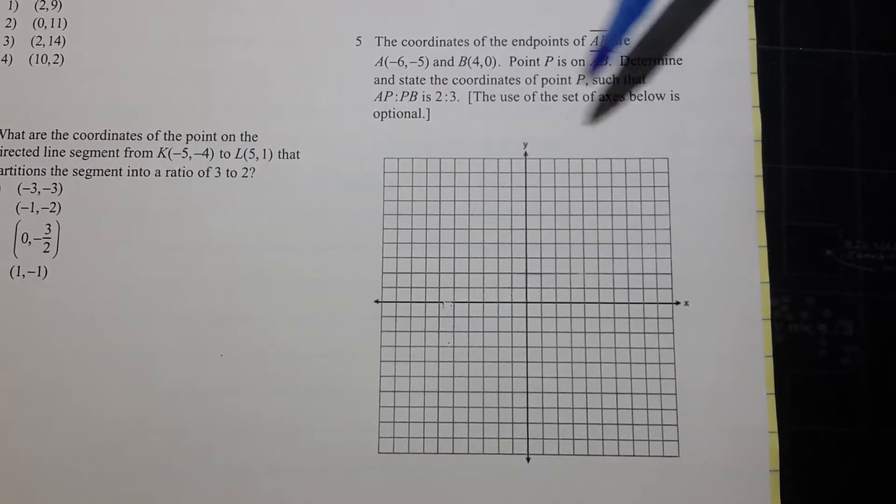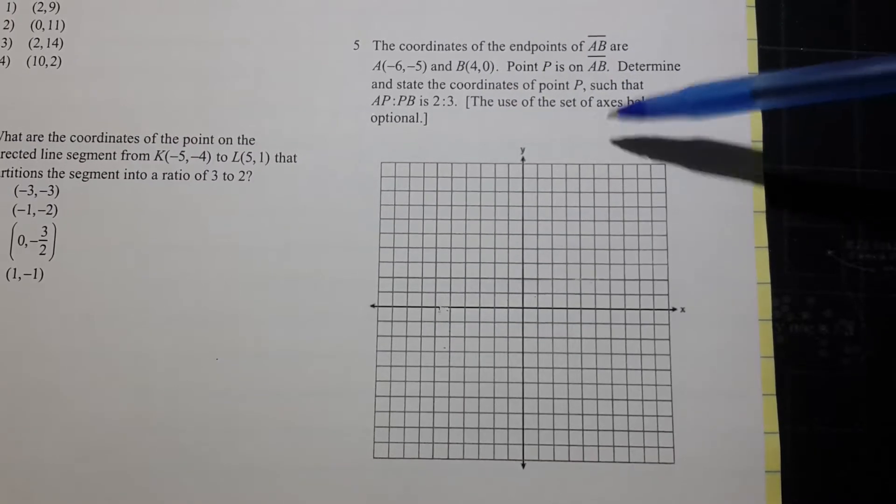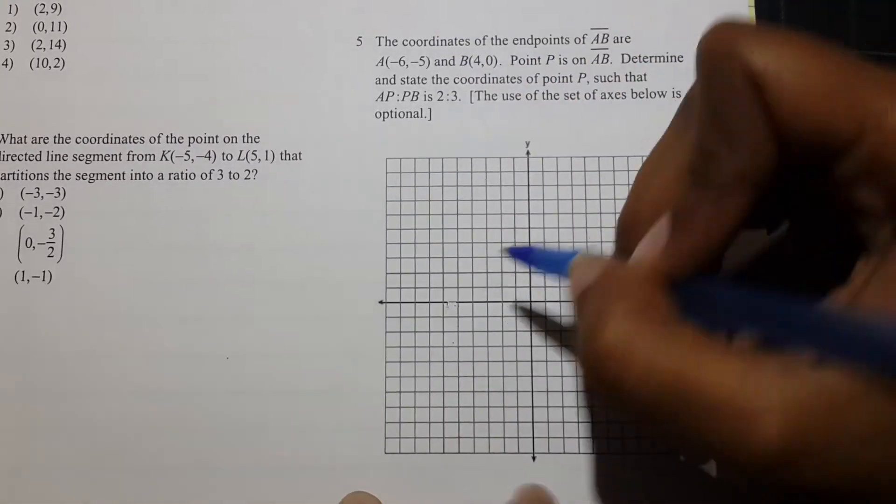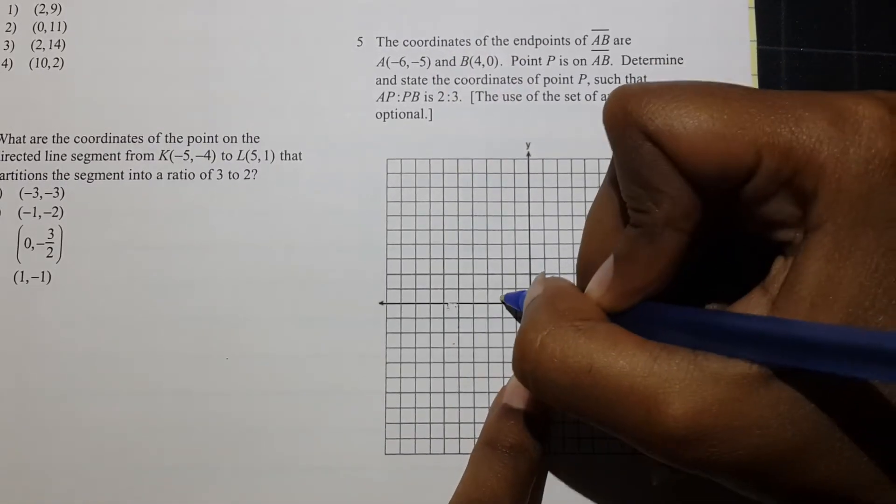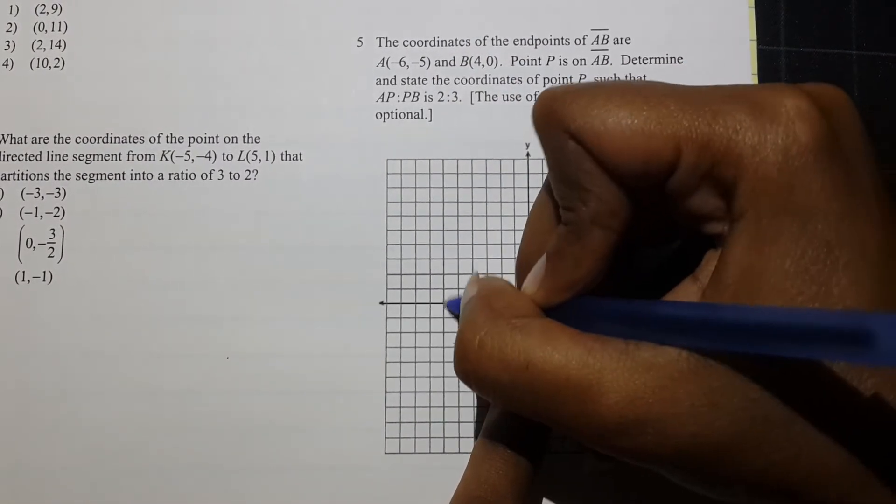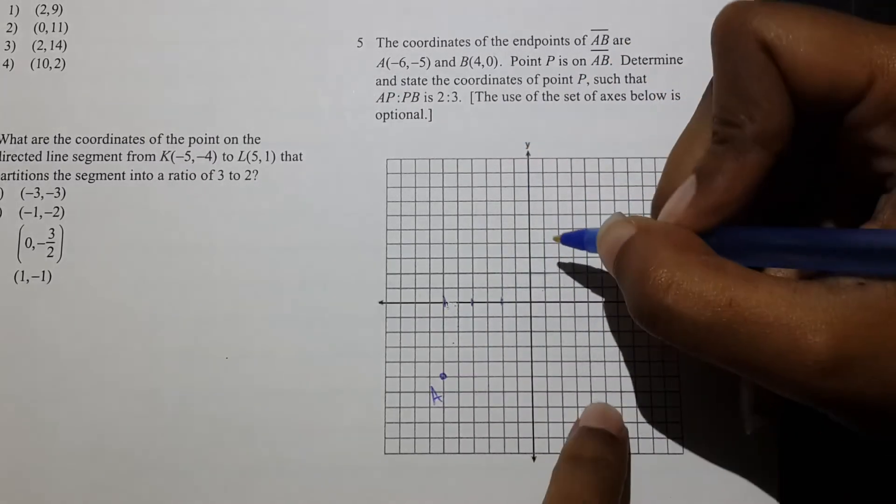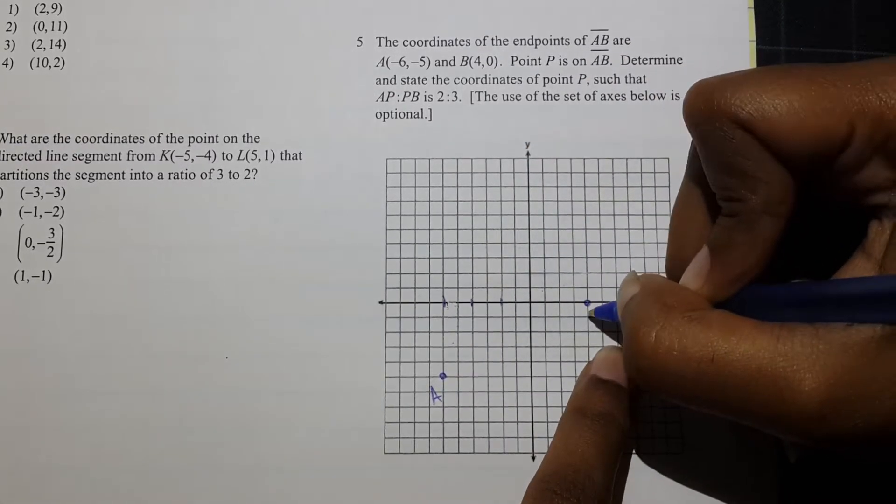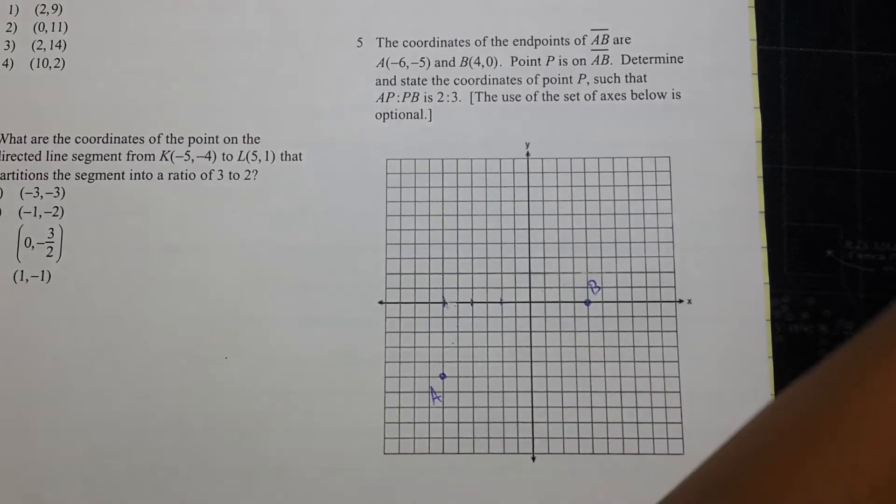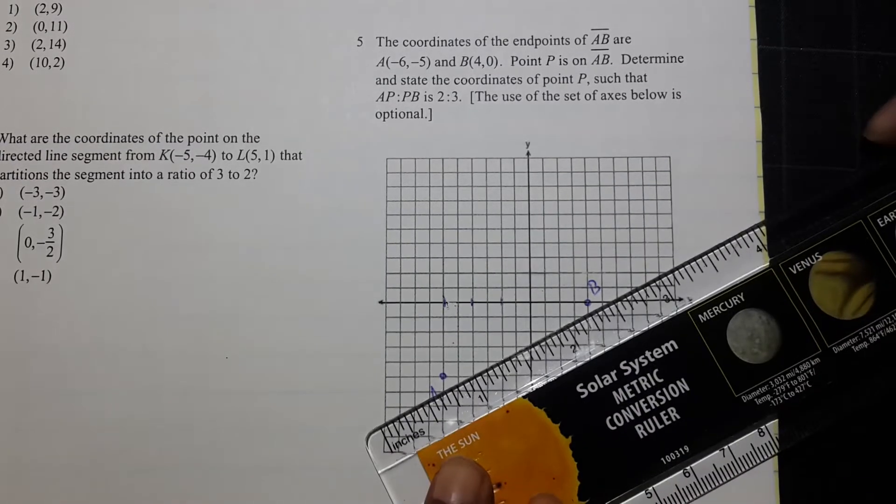The use of the set of axes below is optional. So we're actually going to use the axes below this time. Now, the first thing you want to do is plot the points. So we have negative 6, negative 5, and that will represent our A. And then we have 4, 0, that's our B. So once you plot those points, you want to take your ruler and connect them.